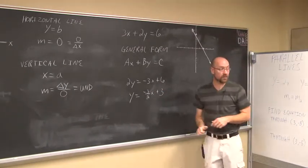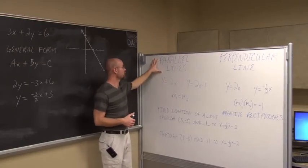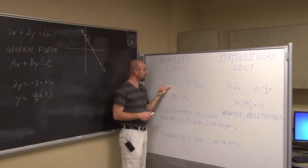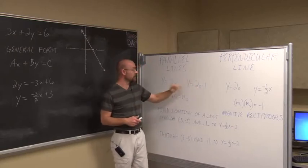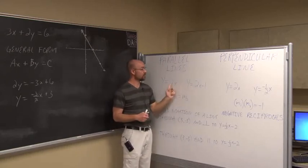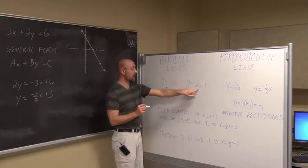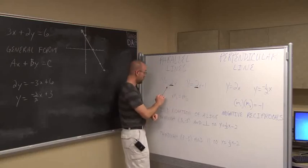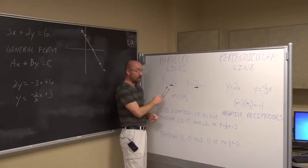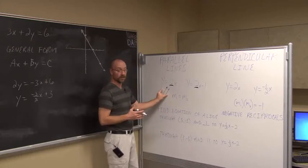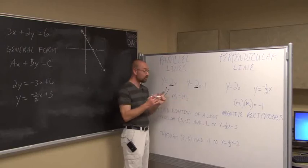Now let's look at parallel and perpendicular lines. For parallel lines, consider y equals 2x and another line with the same slope. Both are positive slopes increasing left to right, with the exact same steepness — one is just shifted down by one unit. These lines are parallel, meaning they will never intersect. So if we're told two lines are parallel and we know one slope, we know both slopes: parallel lines have the same slope.